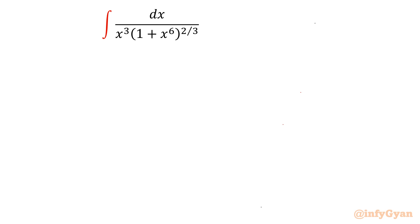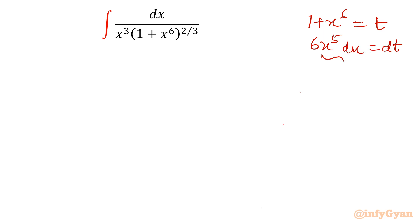If we consider (1 + x⁶) equal to some substitution t, it will form 6x⁵ dx = dt. Now dx and x⁵ appear in the derivative, but in our integral we require dx over x³. So we need to think carefully about how to approach this problem.